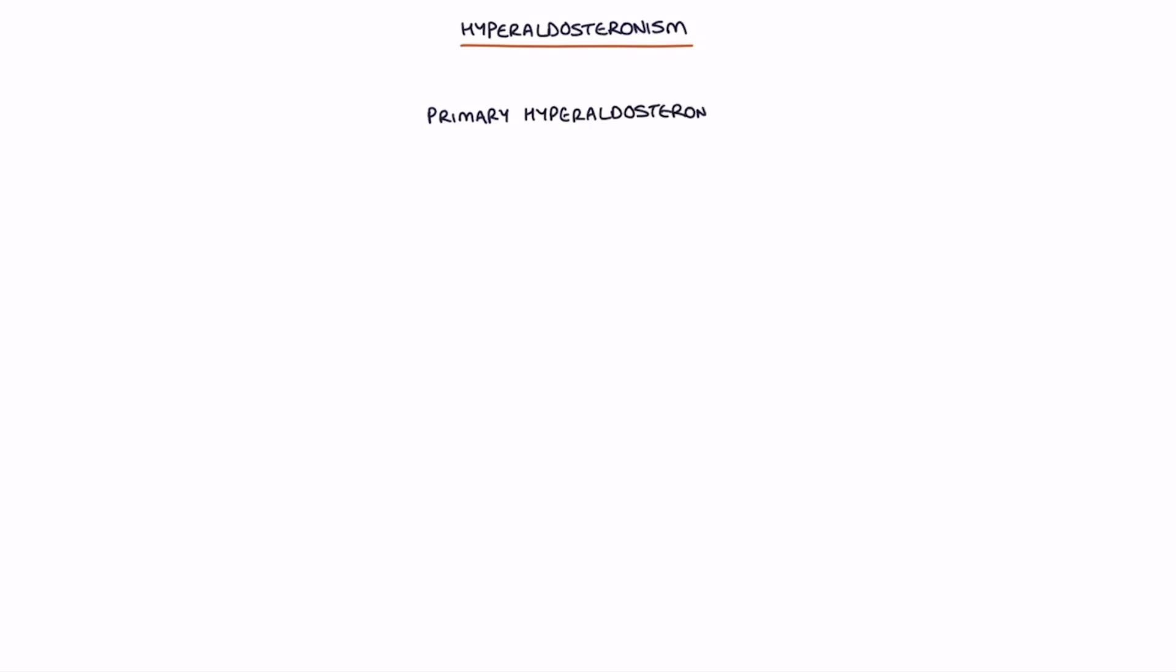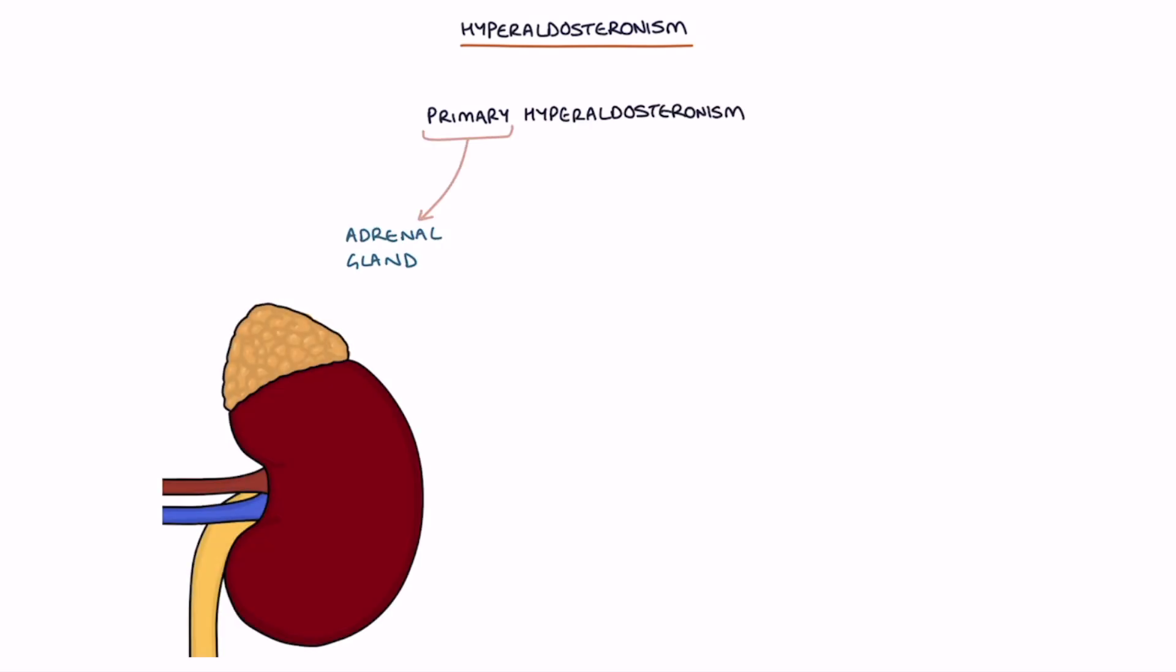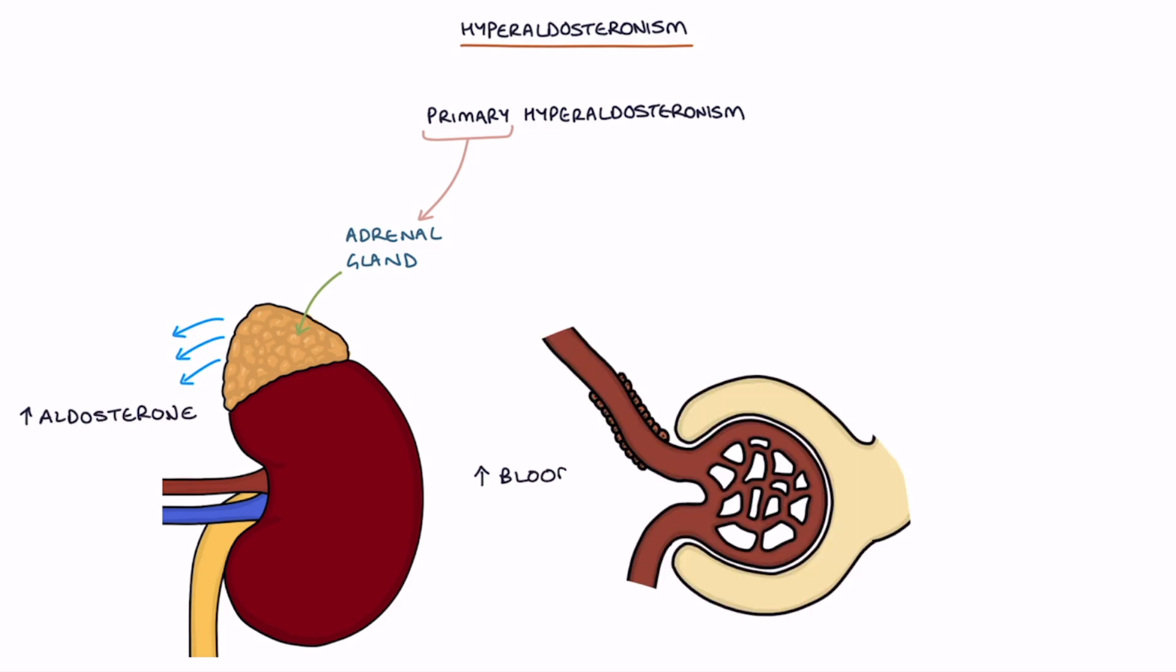Primary hyperaldosteronism is when the adrenal glands are directly responsible for producing too much aldosterone. High blood pressure is sensed by the juxtaglomerular cells in the kidneys and they respond by reducing the production of renin. Therefore, the serum renin is low as it's suppressed by the high blood pressure.